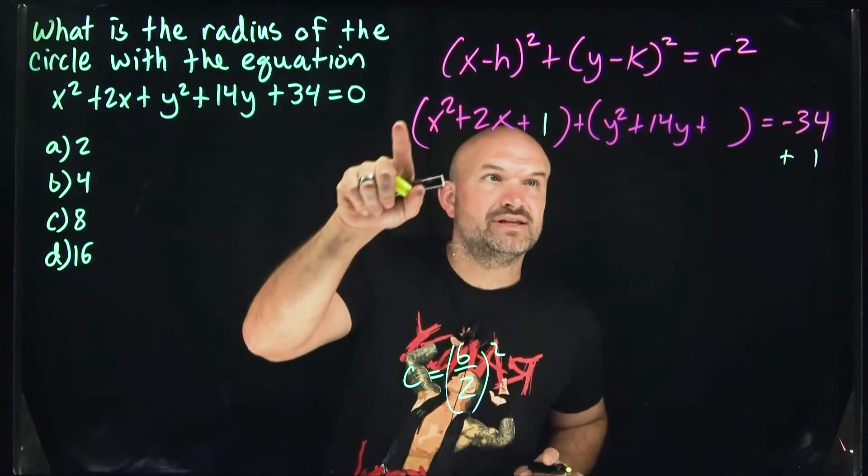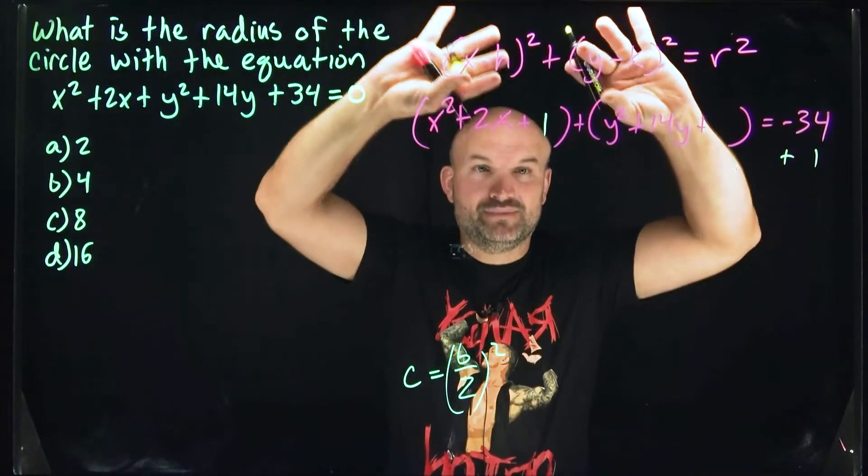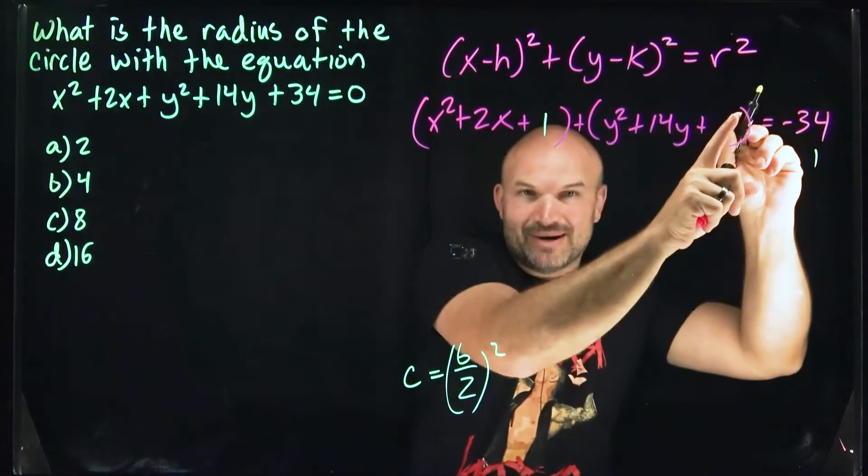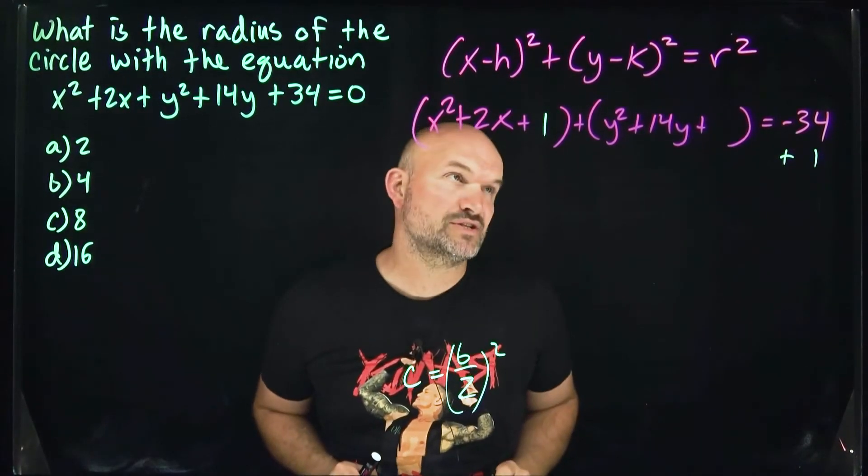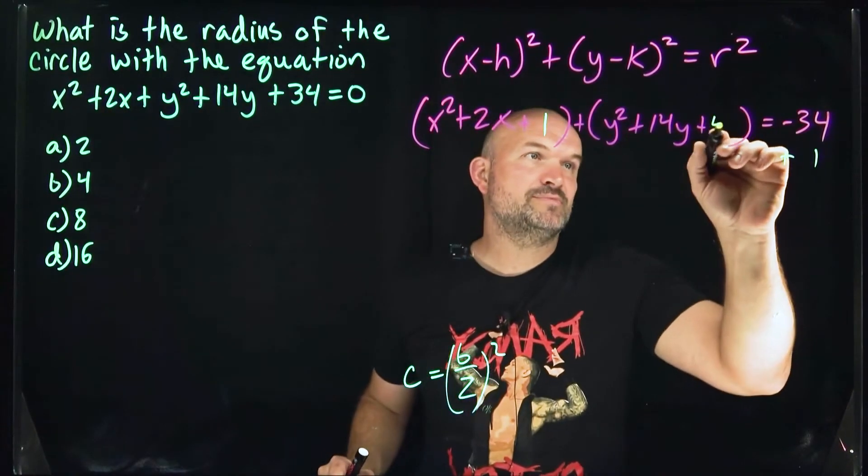I subtracted the 34 to the other side because I want the binomial squares on one side and the radius squared on the other. For the y terms, 14 divided by 2 is 7. 7 squared is 49.